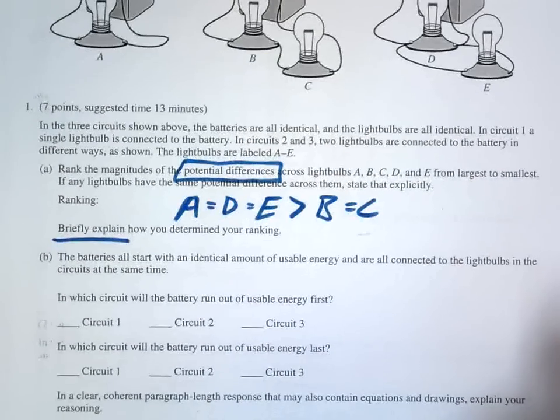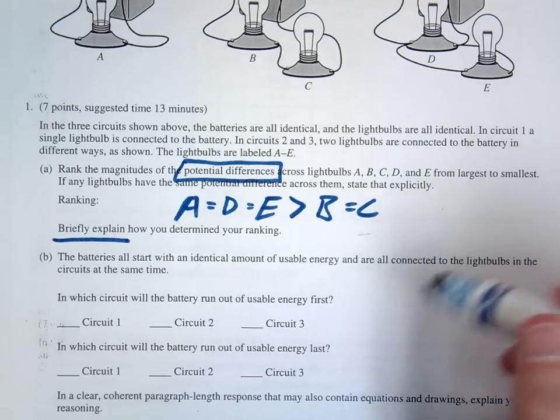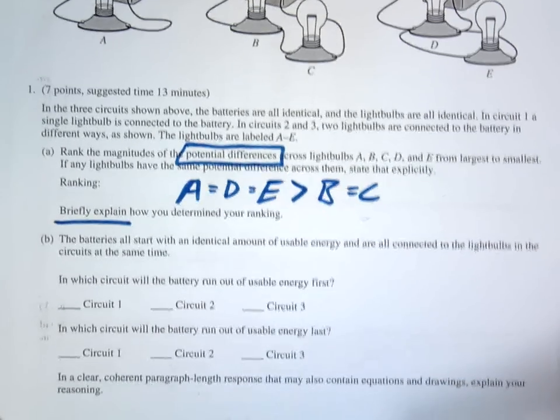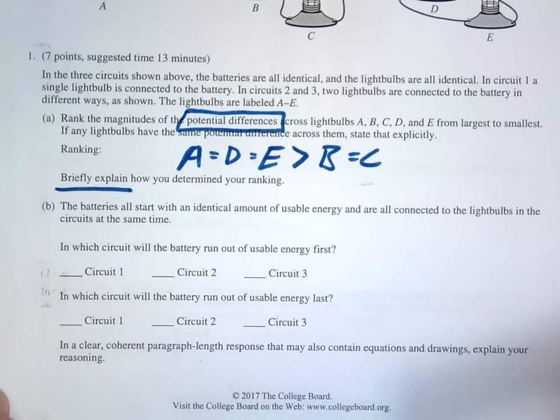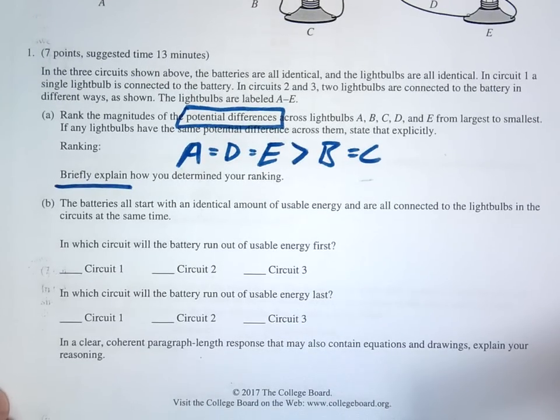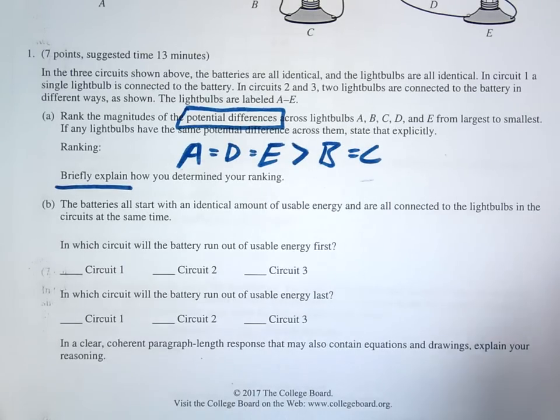All right, the next question is asking about they each have the same amount of usable energy. Which circuit is going to run out of usable energy first and which one is going to run out of usable energy last?